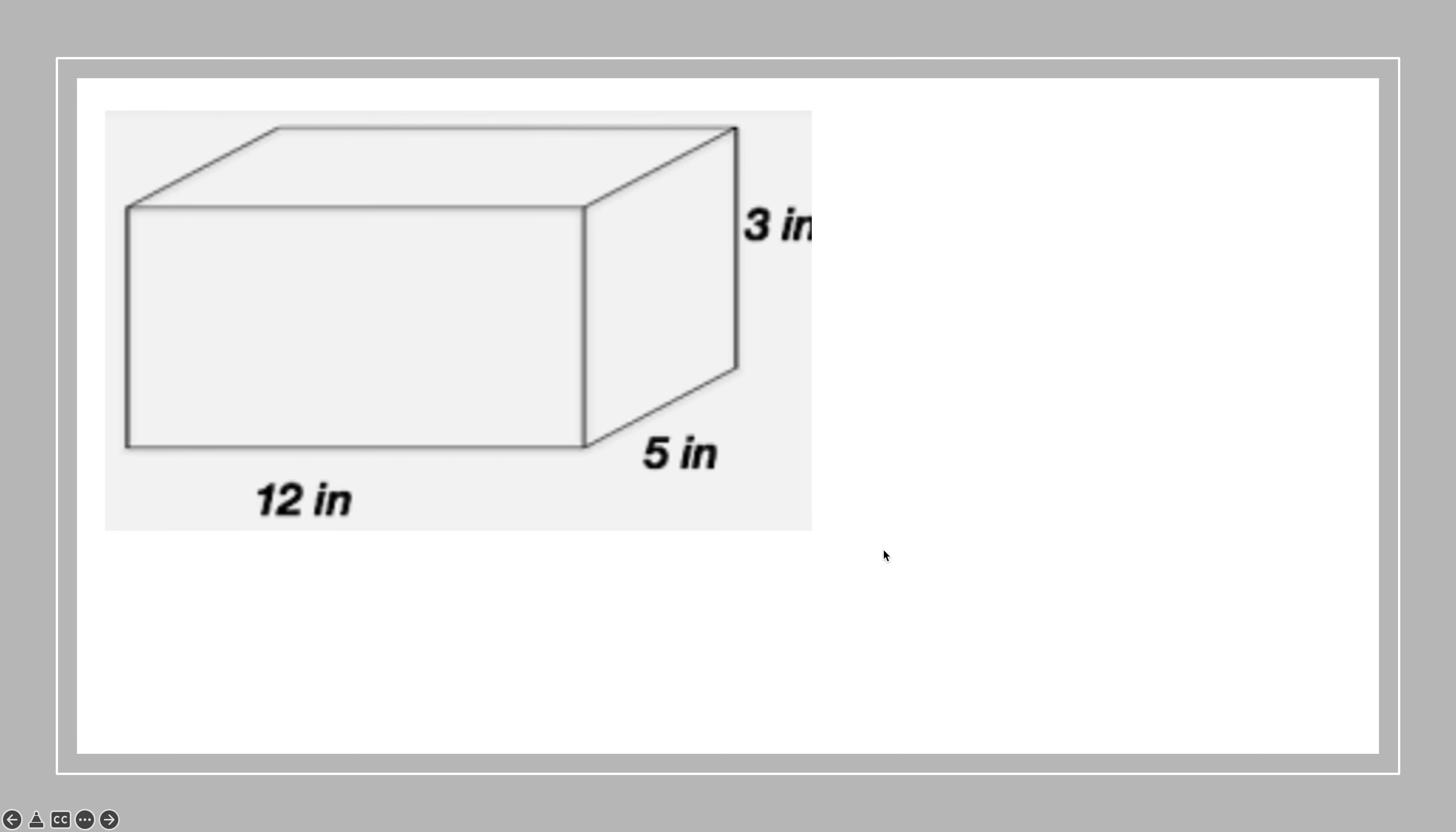Try this one. I like area of the base times the height. So that would be 12 times 5 gives me the base, which is 60. Multiplying that by the height, which is 3, and I get 180. If you prefer length times width times height, you just do 12 times 5 times 3, and it's 180. The thing I don't like about length times width times height is you don't understand the concept behind it, whereas you do understand the concept behind area of the base times height.